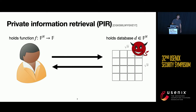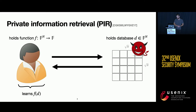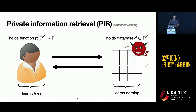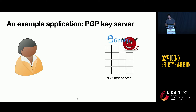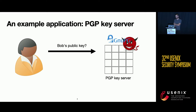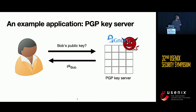You can also generalize Private Information Retrieval to function evaluation. In this case Alice would learn a function of the database, and again we want to ensure that the server learns nothing about Alice's query. As an example, we can imagine a PGP key server where Alice would query for Bob's public key. This query would be private and the server would reply with the public key of Bob.